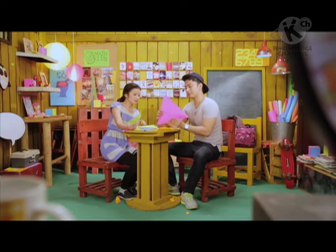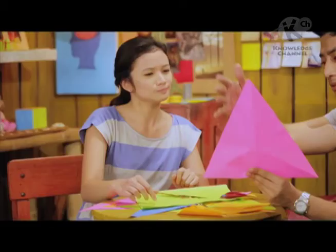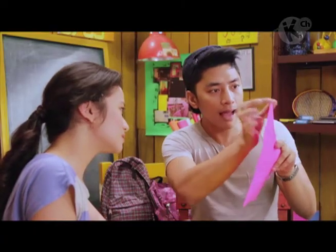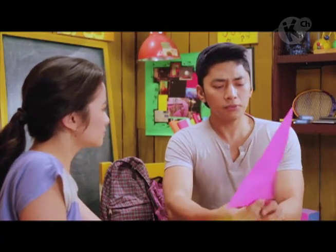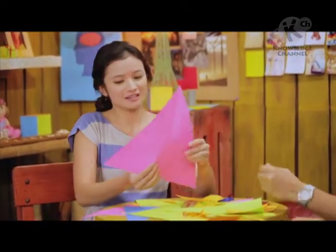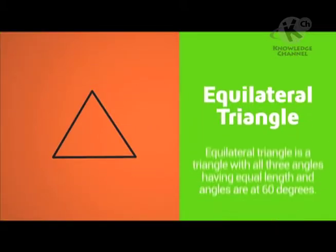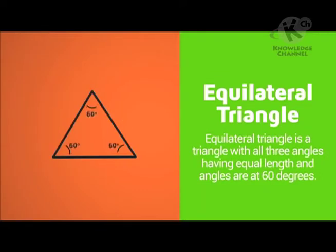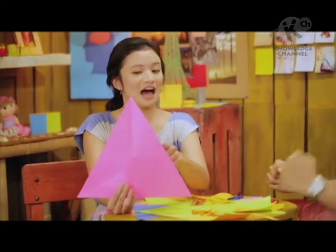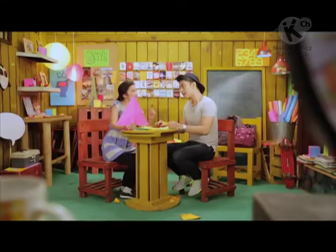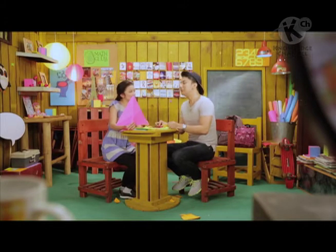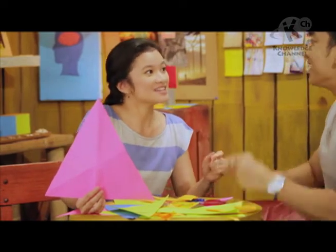Alam ko ito eh. Triangle na all sides of equal length. At saka lahat ng angles — lahat ng angles — 60 degrees. Alam ko ito eh! Equal na din ang triangle! Dahil lahat ng haba ng sides ay pare-pareho. At tulad ng nagsabi mo, lahat ng angles ay uniformly 60 degrees!